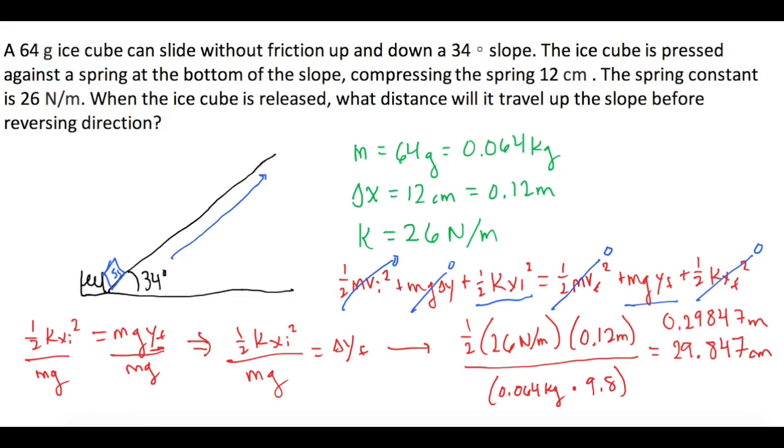So let's think about this. I'm going to redraw our little picture here. So we just figured out that our ice cube will travel a delta y of 29.847 centimeters. But the question wants to know how far up the slope it'll go before reversing direction. So you might be tempted to plug in that 29.847 and it's going to tell you it's wrong because that is our change in y, but they want to know how far up the slope it is. So we need to use some trigonometry.